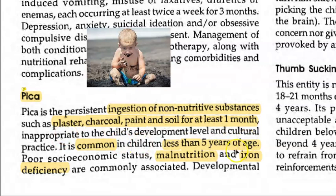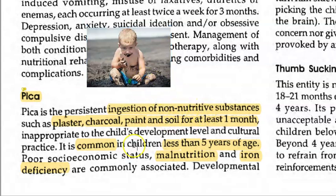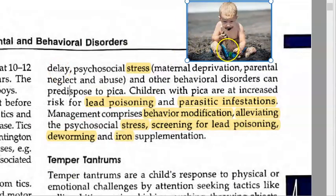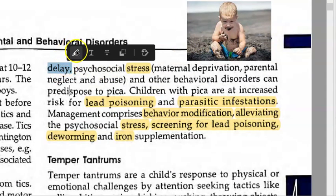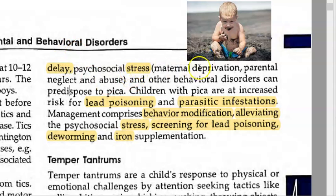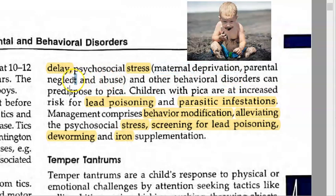Pica is common in children less than five years of age. It is mostly seen in children who have malnutrition, iron deficiency, or poor economic status. The causes include malnutrition, developmental delay, stress on the child, parental neglect, or abuse of the child.